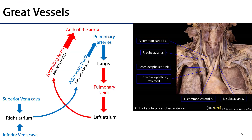The great vessels are vessels that deliver blood to and conduct blood away from the heart. Beginning with the vessels serving the right atrium, we have the vena cavae — the superior and inferior vena cava — which return blood from the systemic loop to the right atrium.